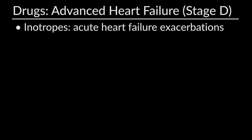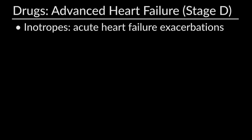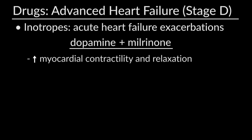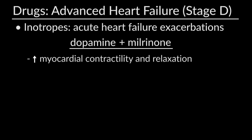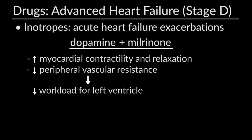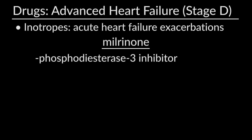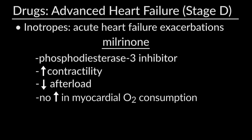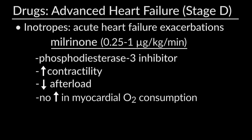For advanced heart failure — stage D — inotropes are used for acute exacerbations to increase cardiac output by improving contraction and heart rate response. Catecholamines are most frequently used. We prefer dopamine in combination with milrinone for decompensated heart failure, as it improves myocardial contractility and relaxation while also reducing peripheral vascular resistance, decreasing the workload of the left ventricle. Milrinone, a phosphodiesterase 3 inhibitor, increases contractility, reduces afterload, and has no significant increase in myocardial oxygen consumption. Infusions can commence at 0.25 micrograms per kilo per minute up to 1 microgram per kilo per minute, and it has been shown to be effective and safe in an outpatient setting.